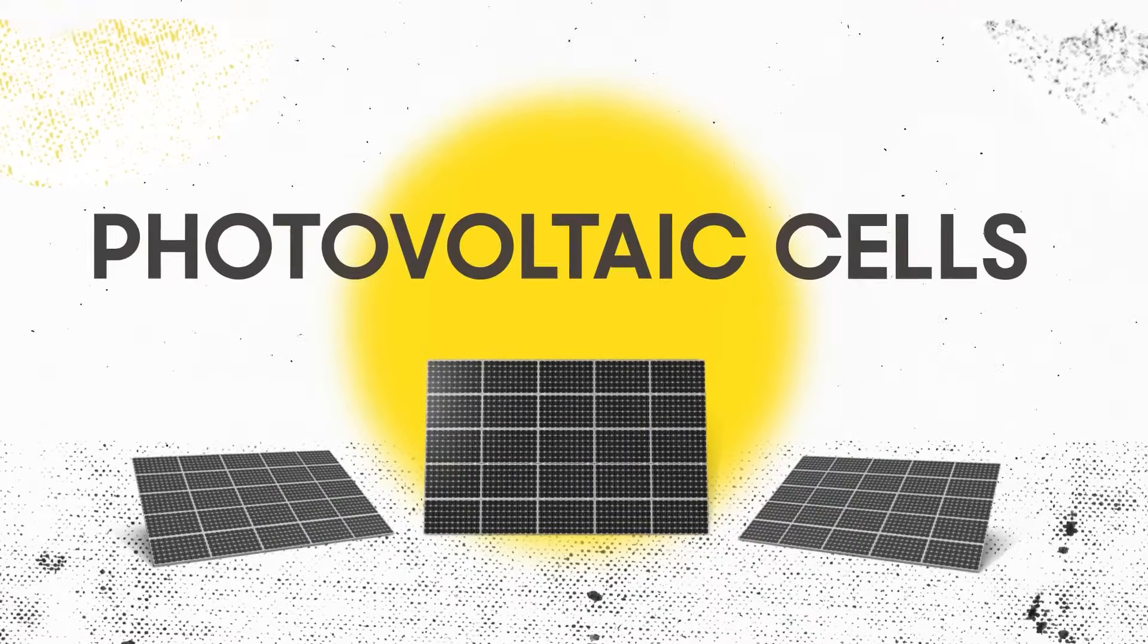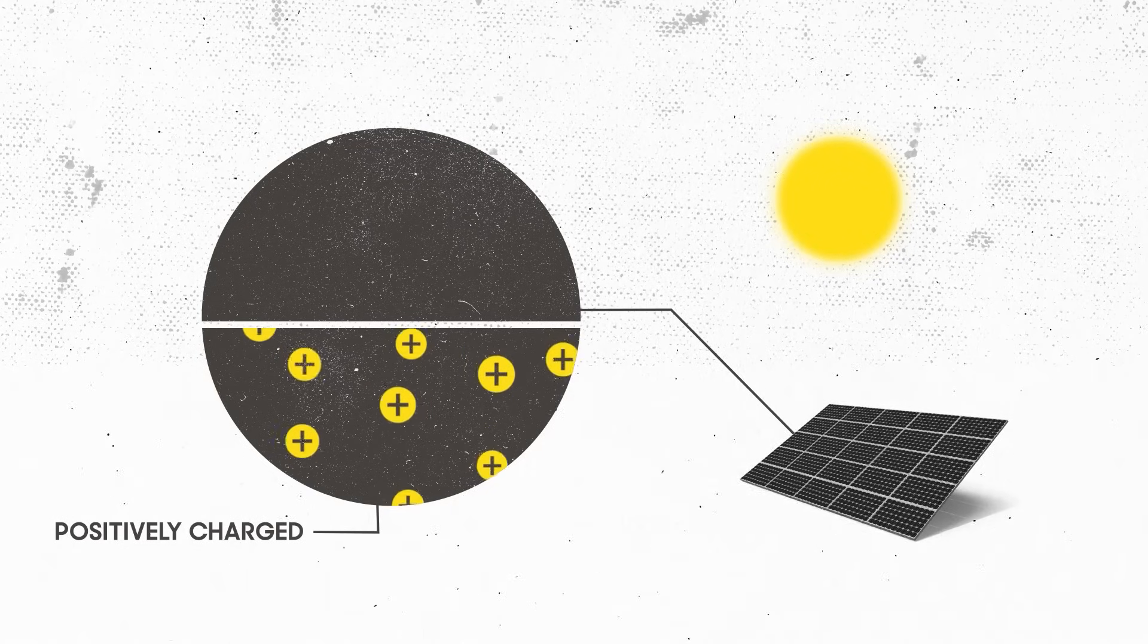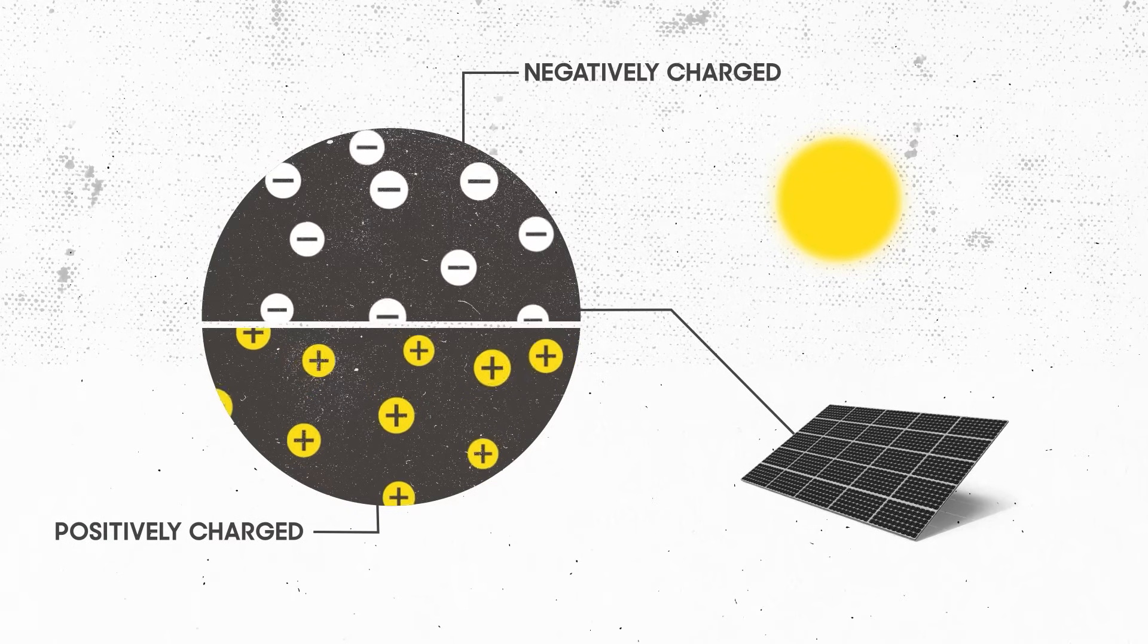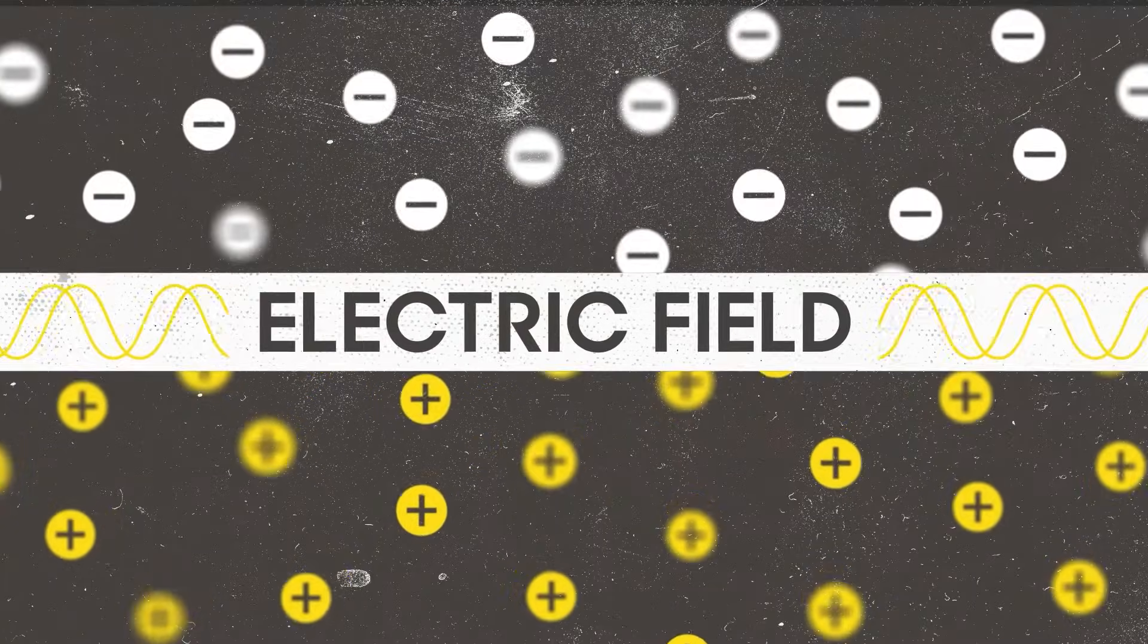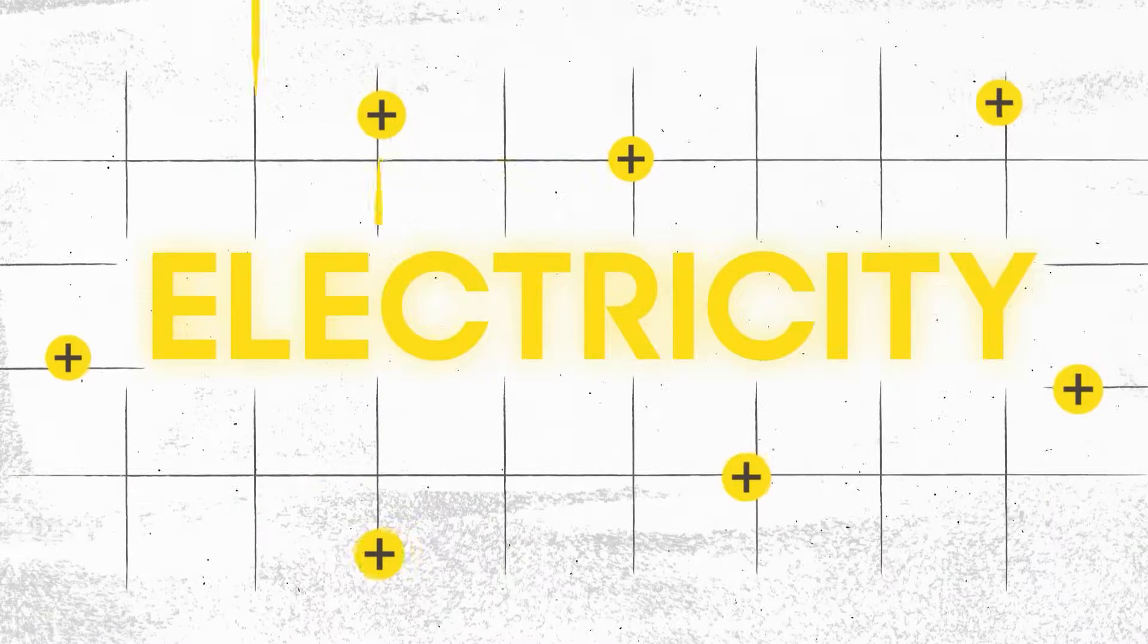It's all to do with the photovoltaic cells that solar panels are made from. Photovoltaic cells are made out of two layers of silicon. One layer is positively charged and the other is negatively charged, creating an electric field that will enable an electric current to be generated.